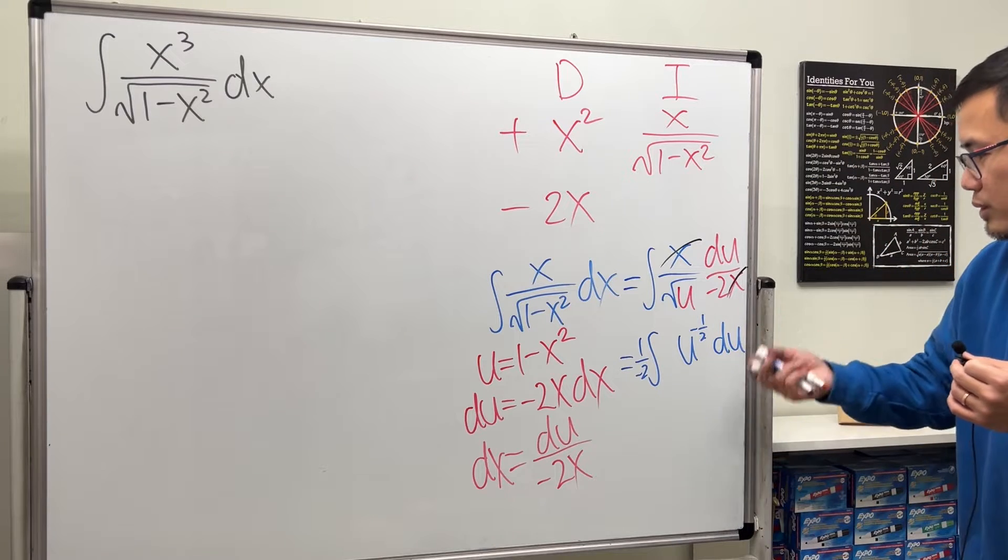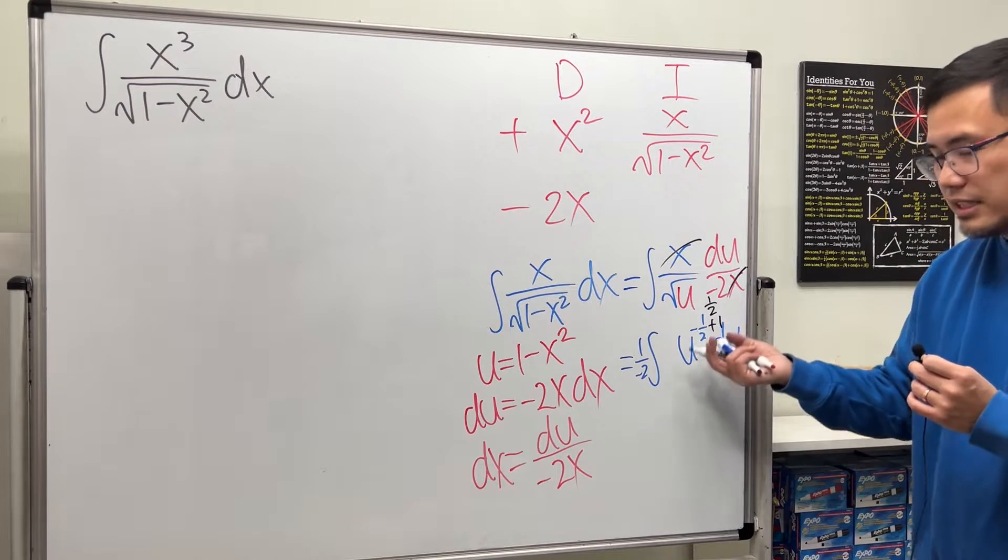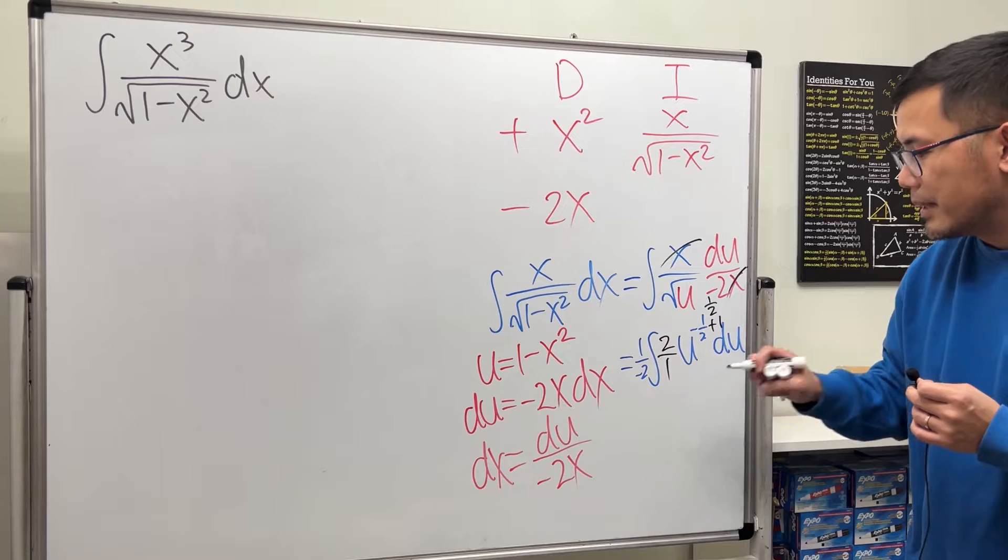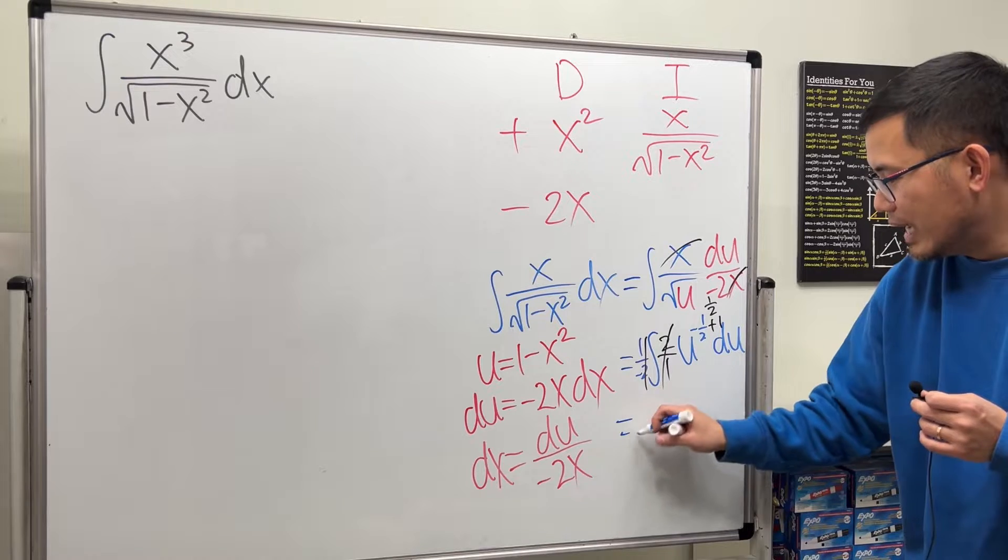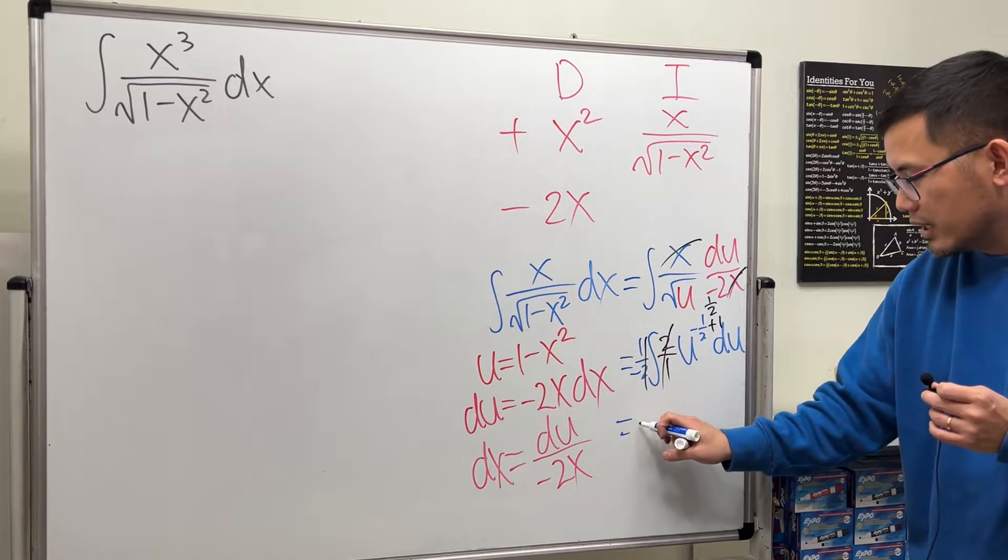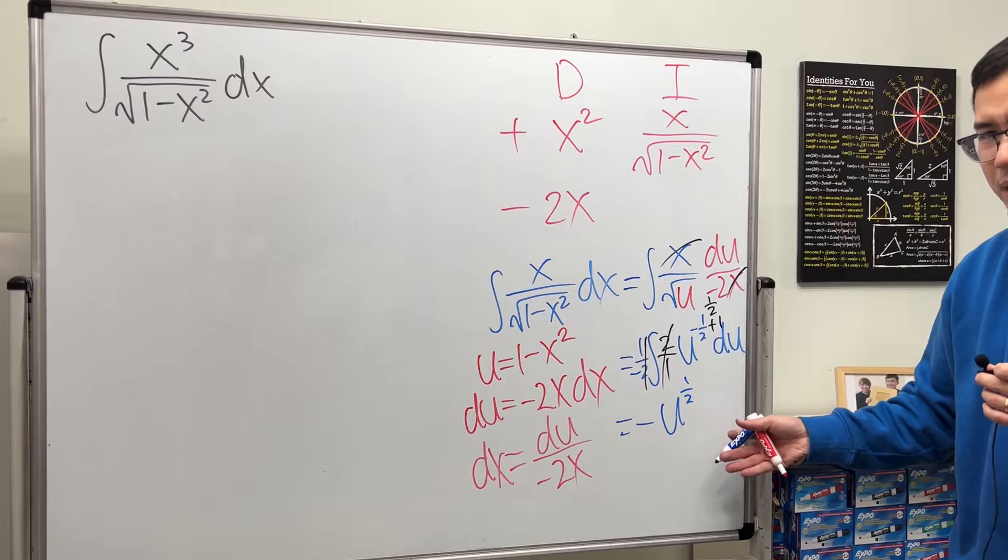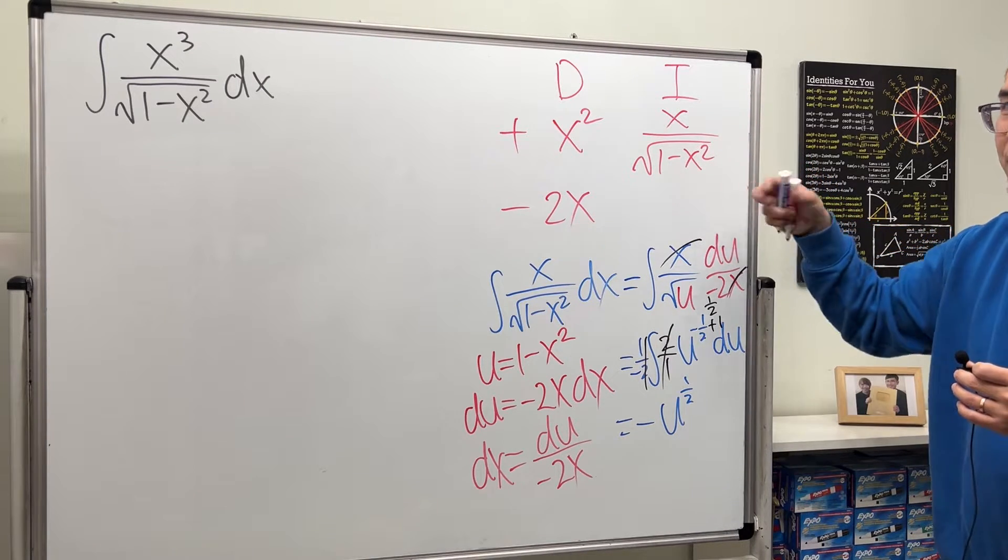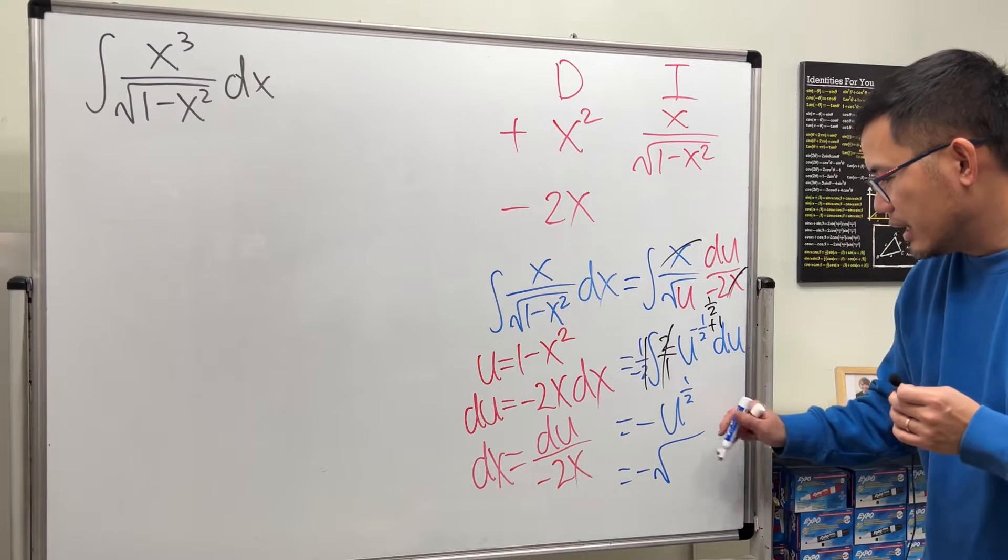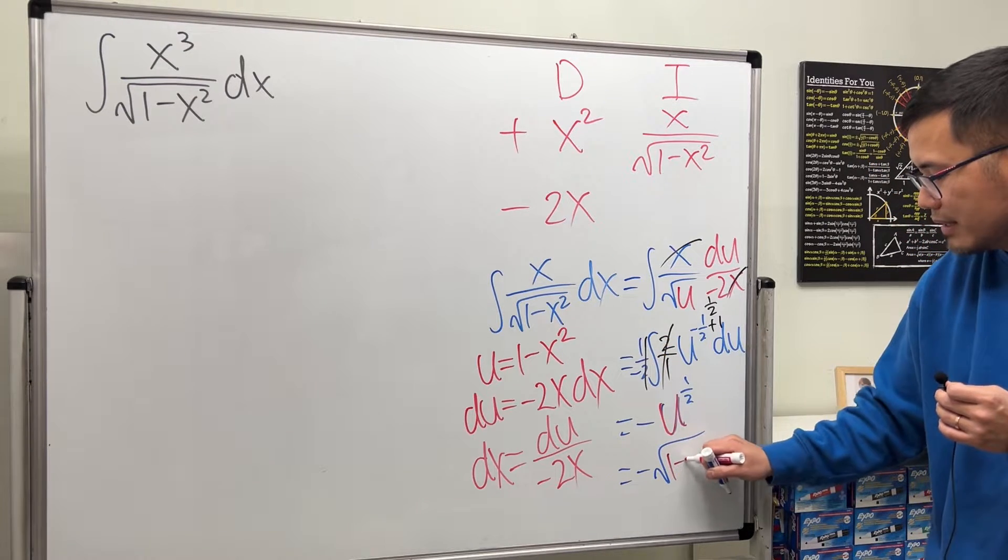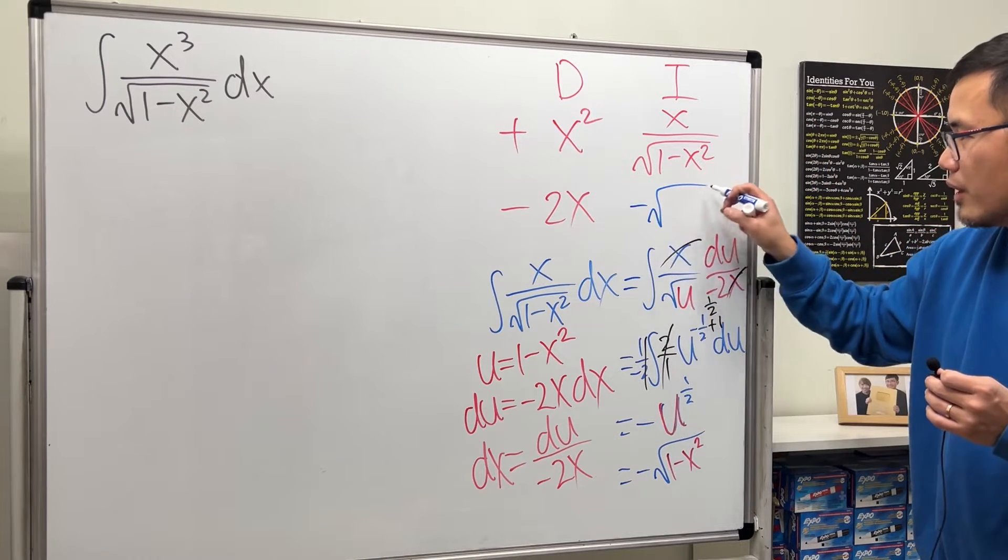To finish this, go ahead and use the reverse power rule. Add 1 to the power and we get positive 1 half. Divided by the new power, it's the same as multiplied by its reciprocal, which is multiplied by 2 over 1. 1 half times 2 over 1 reduces to 1. And we have this negative right here. So we get negative u to the 1 half power. And you can put on plus c right here. But no, because this is just a small integral that we are trying to do. So don't worry about the plus c. And you can write this as negative square root of u, which is 1 minus x squared. So after we integrate this, we get negative square root of 1 minus x squared.